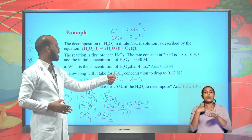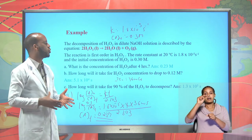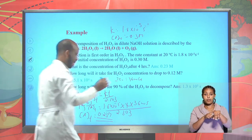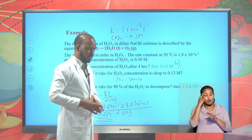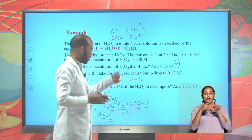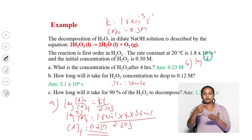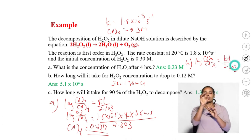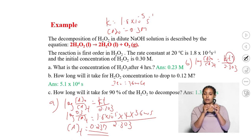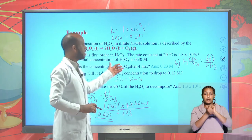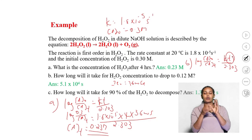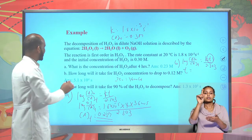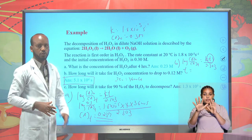Part B: how long will it take for hydrogen peroxide concentration to drop to 0.12 molar? From the integrated rate equation for a first-order reaction: log([A]₀/[A]) = Kt/2.303. You are asked to calculate time t. Substituting the given values into this equation, we get t = 5.1 × 10⁴ seconds.